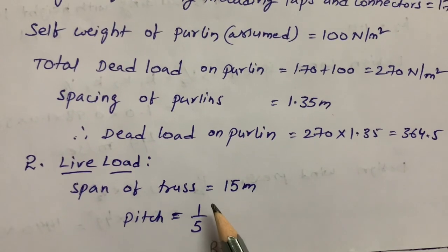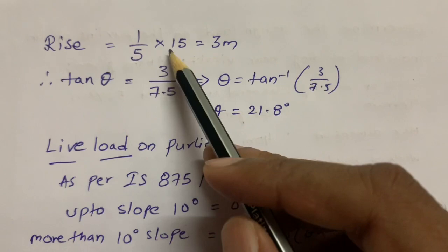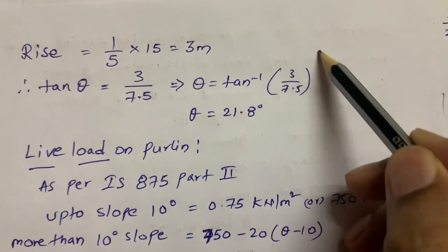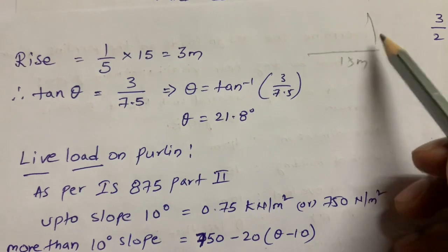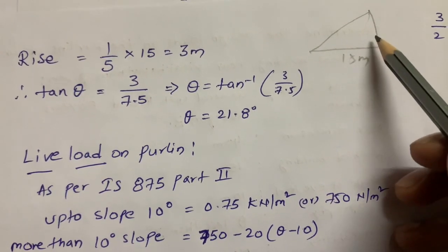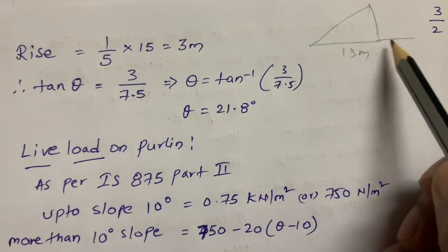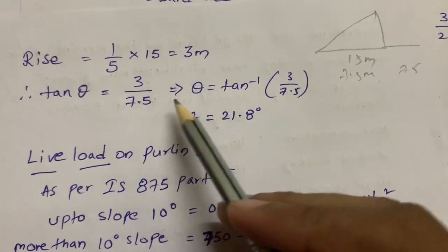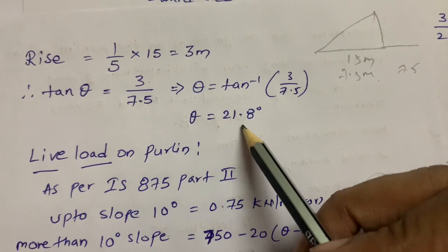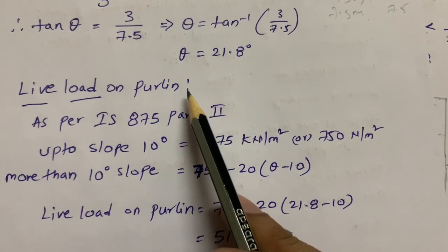For live load, the span of the truss is 15 meters and pitch is given as 1/5. The rise is 1/5 × 15 = 3 meters. Using the truss geometry, tan θ = opposite side / adjacent side = 3 / 7.5, giving θ = tan⁻¹(3/7.5) = 21.8 degrees.